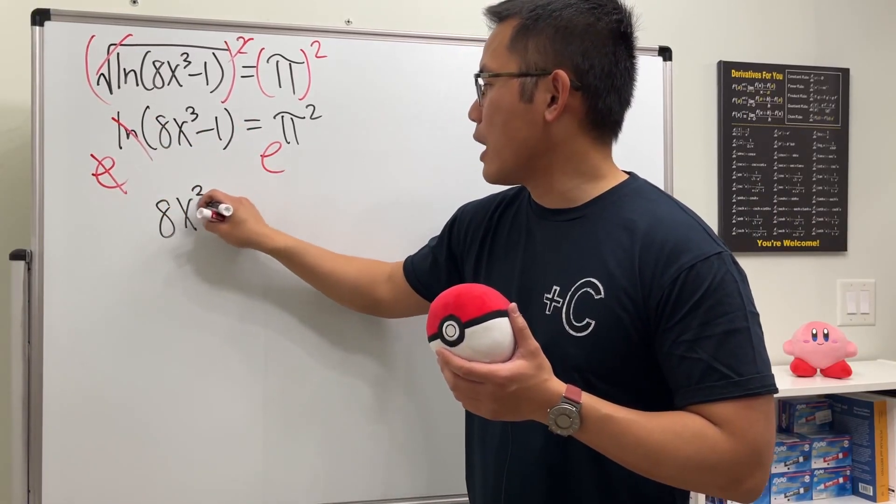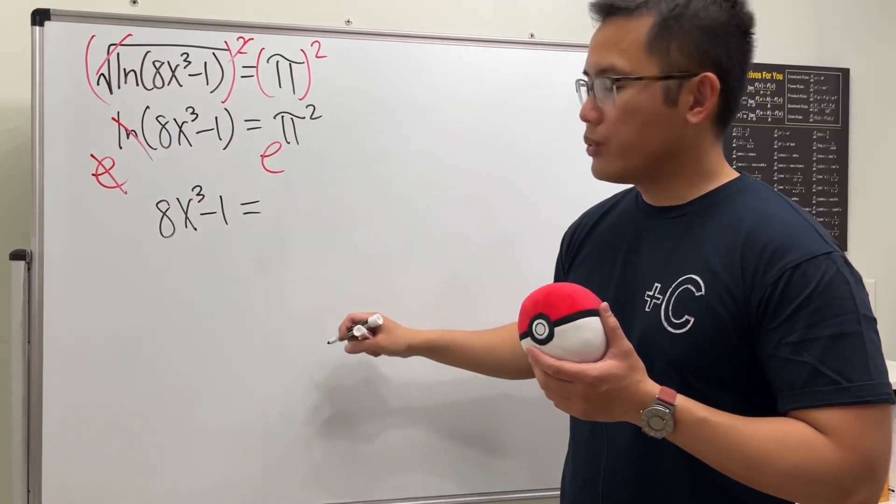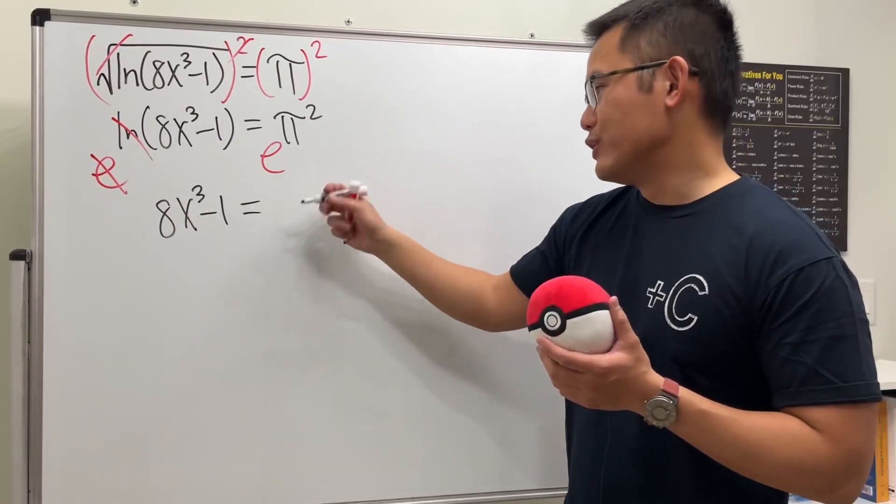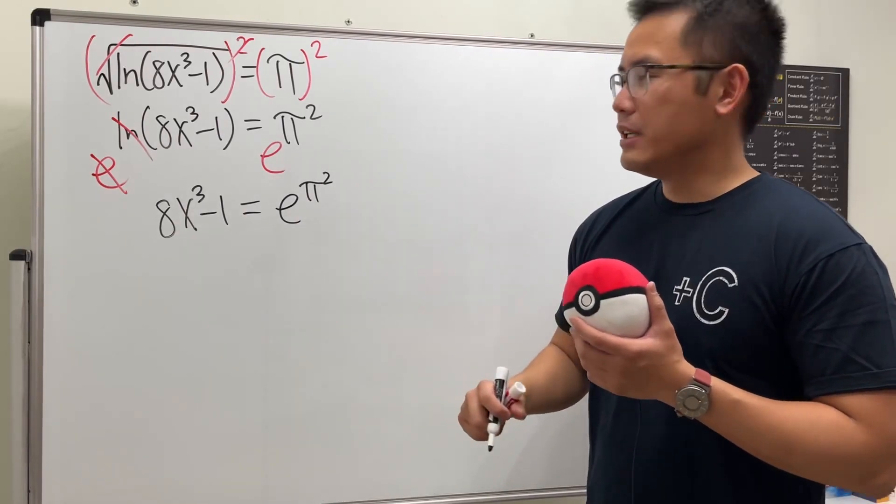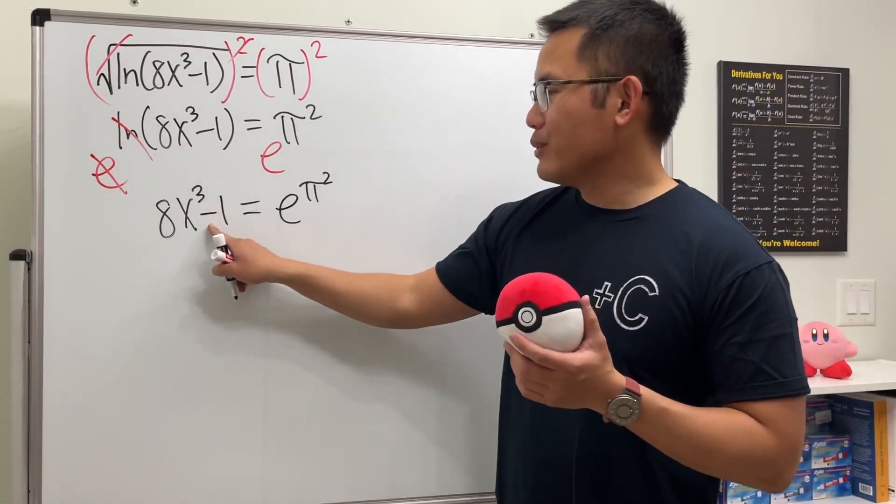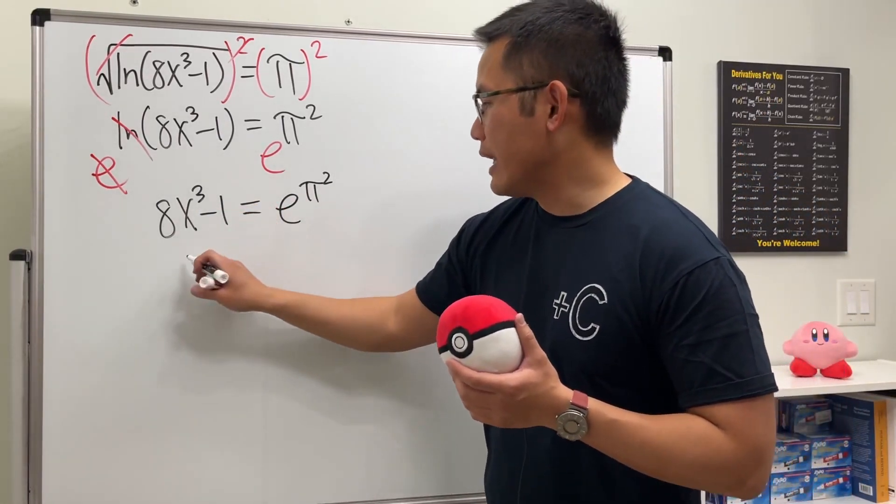Which is pretty crazy, huh? e to the π squared. Okay, I'm going to add 1 on both sides, so we will get 8x to the third power equals... I'm going to add 1 right here and then plus e to the π squared.